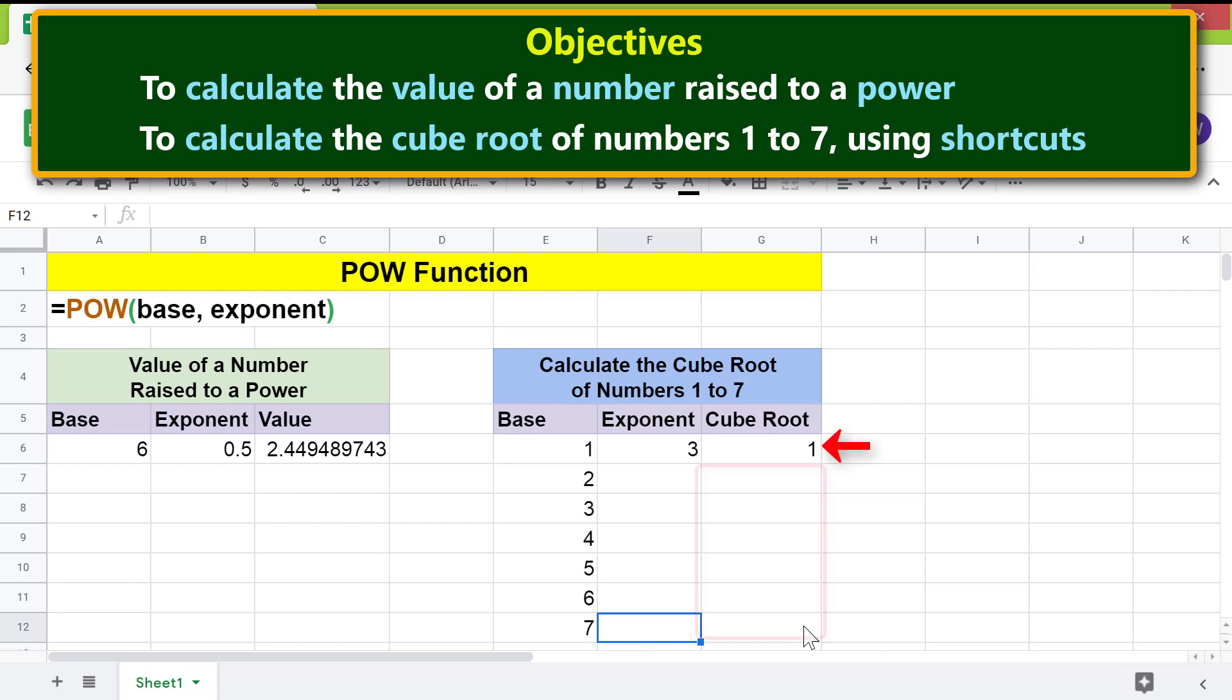Before we copy this formula down these cells, let's make the address of this cell absolute. This way, we do not have to fill this number down these cells. Click this cell and press enter. Click before letter F and press F4. Press enter.